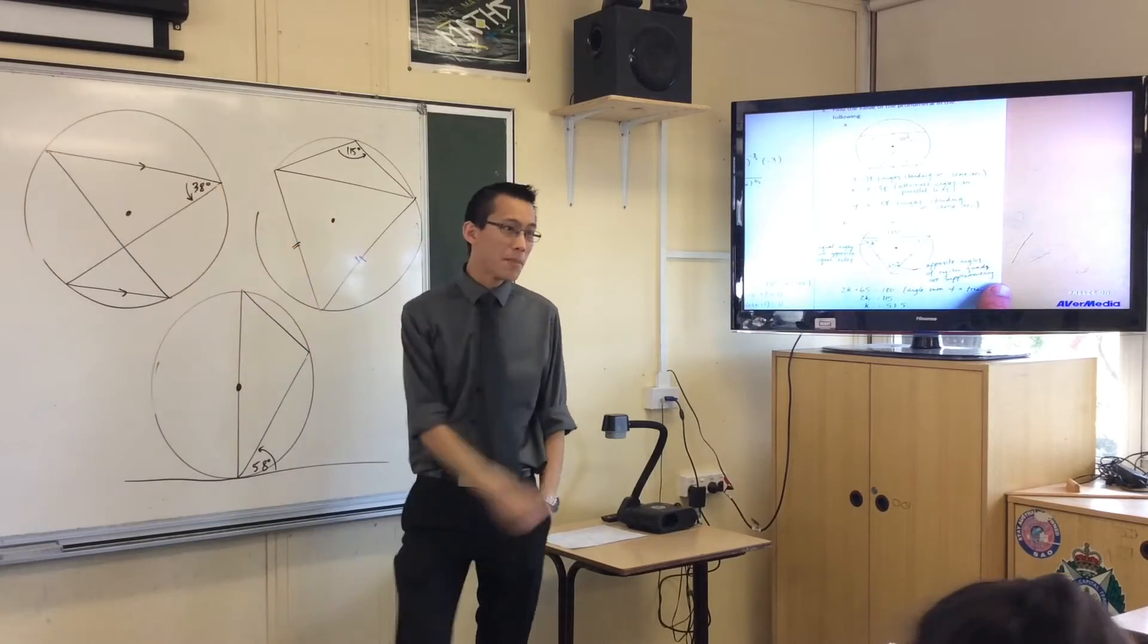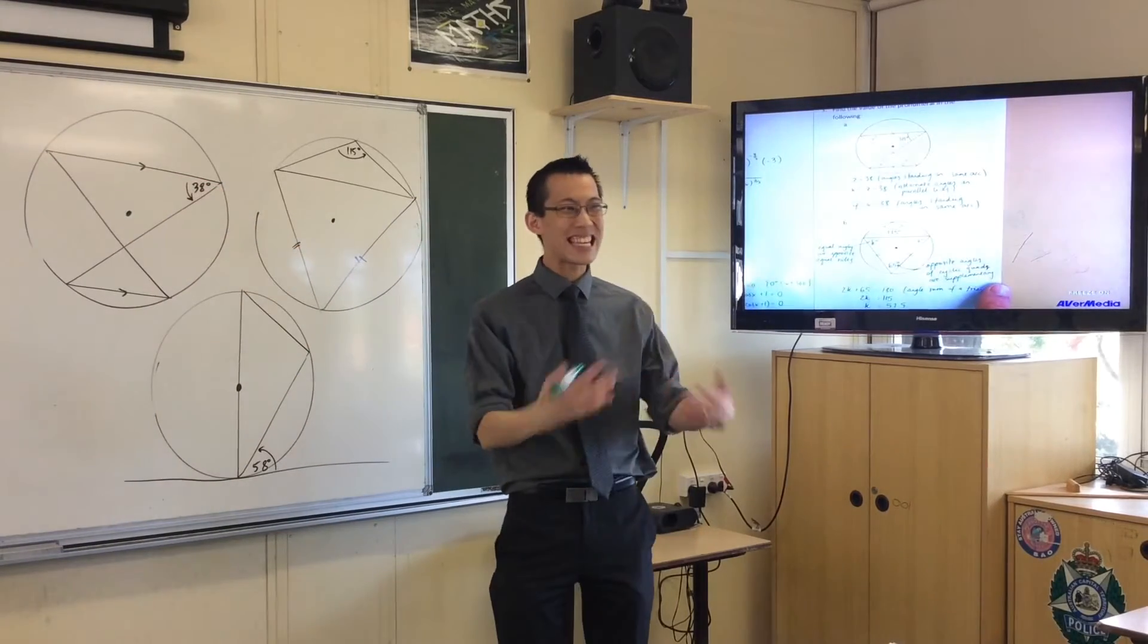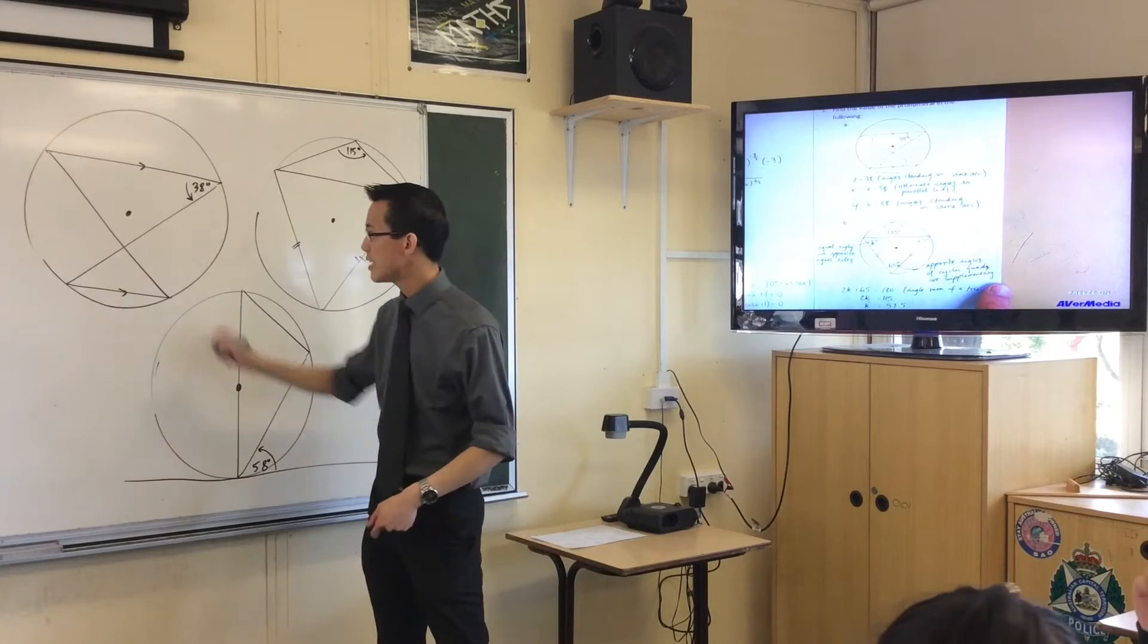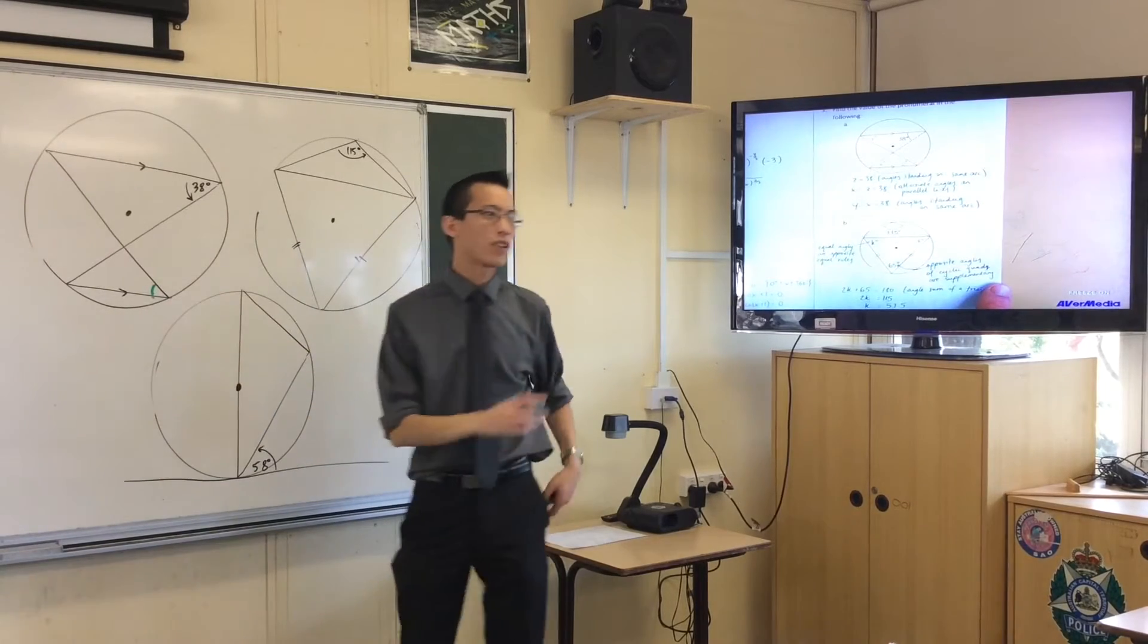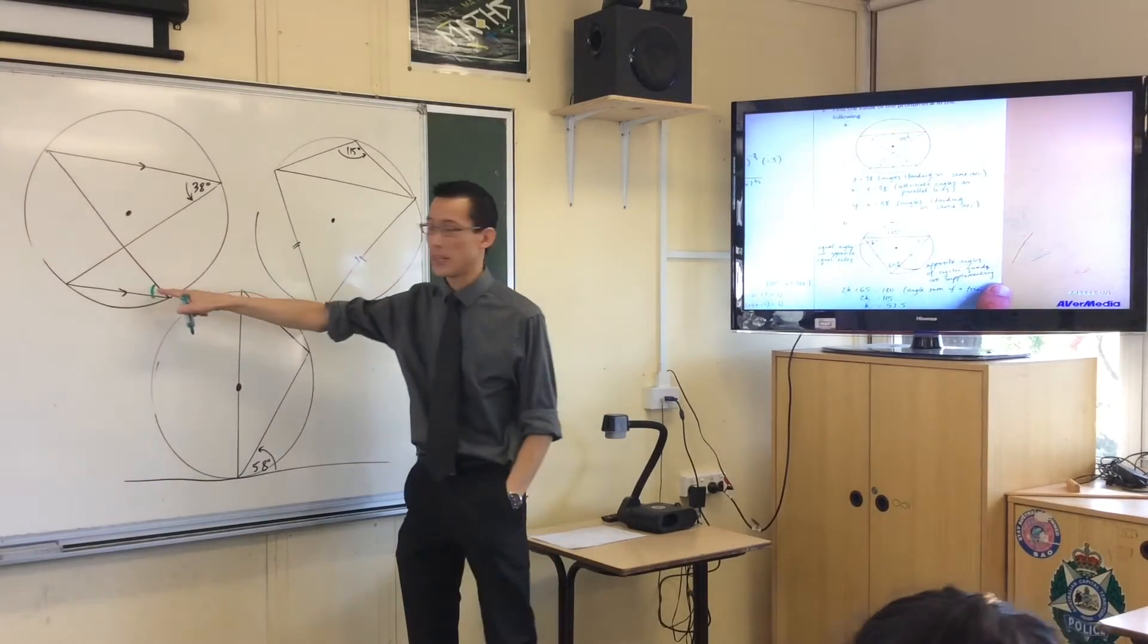So you get given this 38 degrees here. The first angle I see that's easy to get is this one over here. Angles standing on the same arc. That's got to be 38 over there.